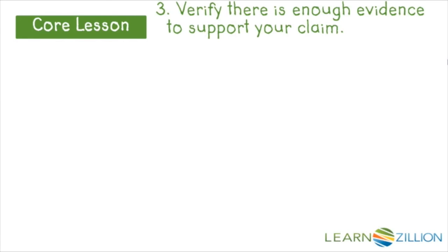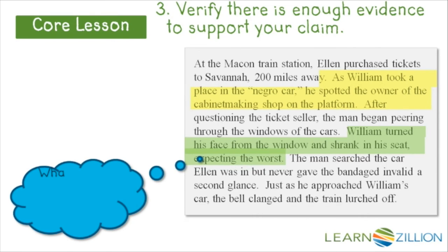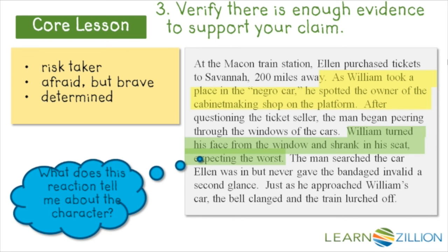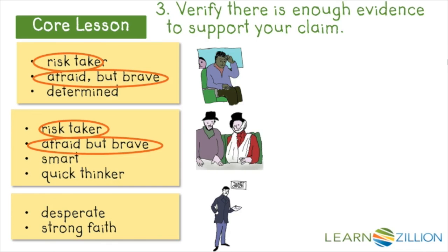Step 3 is to verify that there is enough evidence to support your claim. I'll go back to some of my thinking from my close reading when I looked at how the Crafts dealt with the heart-in-the-mouth moments. This is the passage where we read about William spotting his boss on the platform, just as he was getting ready to leave on the first train. I asked myself, what does this reaction tell me about the character? I noted that William was a risk-taker — afraid but brave and determined — so it seems like this will be good evidence to support my claim that they were brave. I also noted that both William and Ellen were brave in several of the dangerous moments, so I think there will be enough evidence to support my claim.